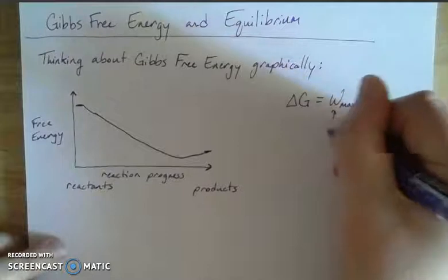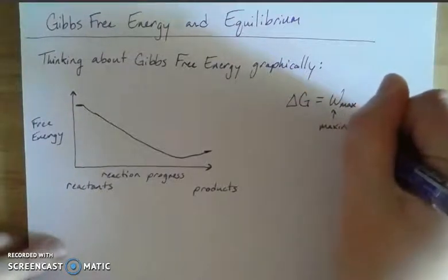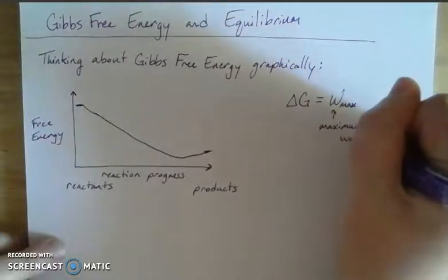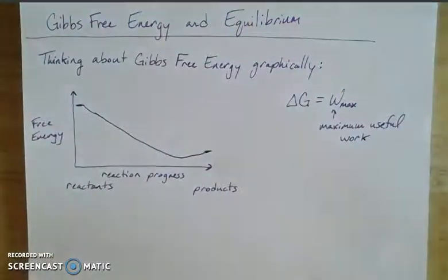And remember, work in a scientific context is just overcoming some sort of resistance. So the free energy that's available is going to give you how much you can actually do with it. If we think about a spontaneous process, because one of the focuses of Gibbs free energy is whether or not a reaction is spontaneous or non-spontaneous.